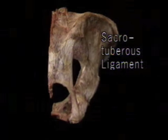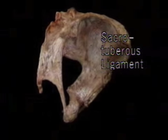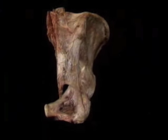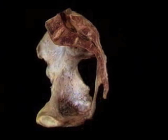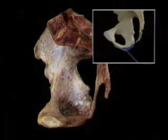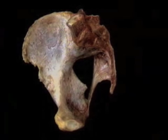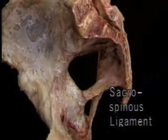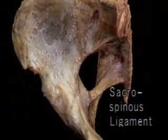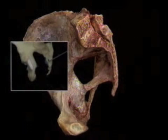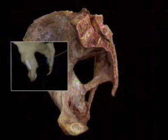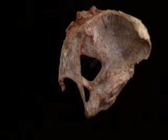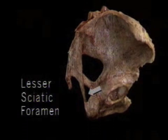Here's the sacrotuberous ligament. It arises on the back of the sacrum, passes laterally, downward, and slightly forward, and is inserted on the ischial tuberosity. Now we'll add the sacrospinous ligament to the picture. The sacrospinous ligament lies in front of the sacrotuberous ligament and medial to it. It goes from the edge of the sacrum to the ischial spine. These two ligaments divide the gap between the sacrum and the ischium into two openings: the greater sciatic foramen and the lesser sciatic foramen.